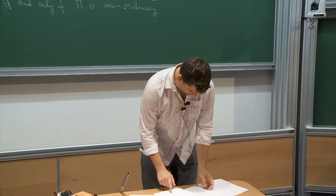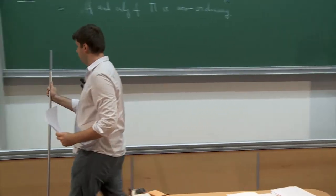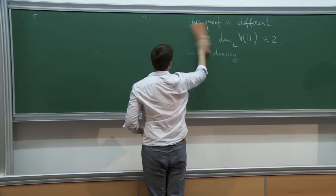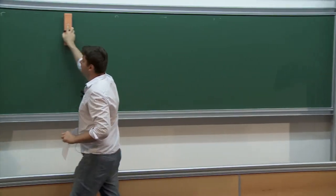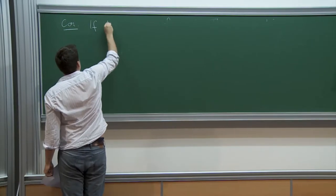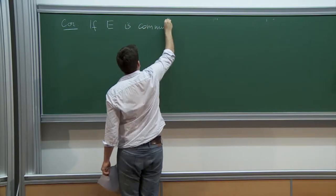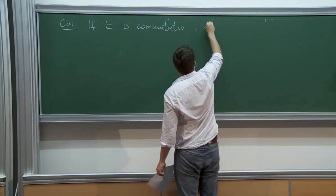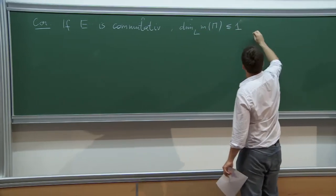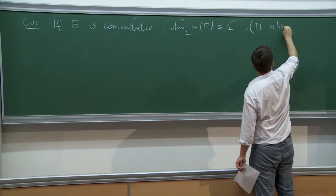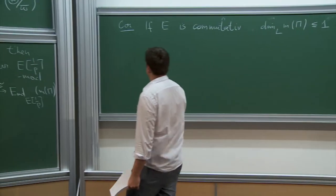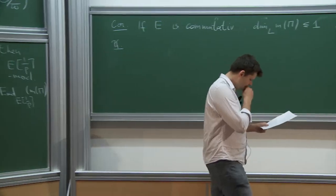Let me state one easy corollary of the theorem. Corollary: if E is commutative and π is absolutely irreducible, then dim_L M(π) equals... let me explain how to deduce this from the proposition. First I let script-E be the image of E[1/p] in End_L(M(π)).